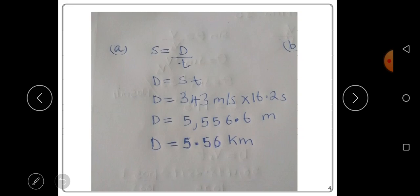So when we do that we are getting 5,556.6 meters. When we write that in kilometers it's giving us 5.56 kilometers. So this is the answer, that's the distance.